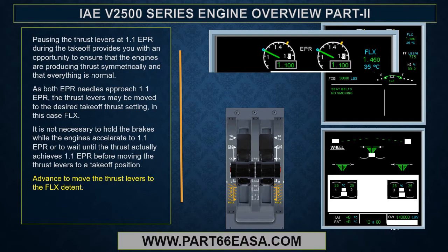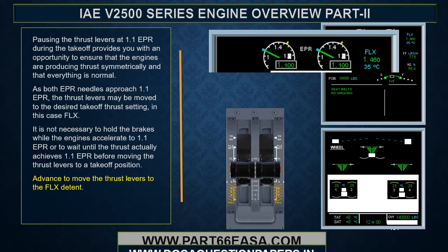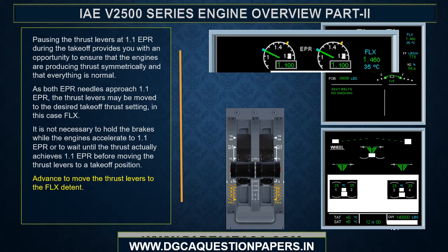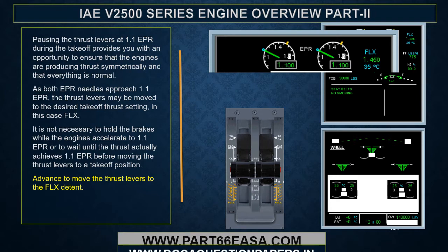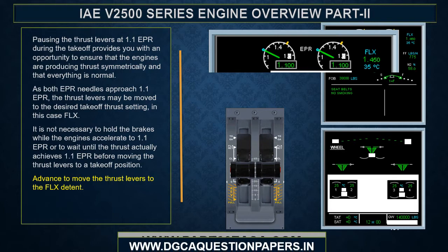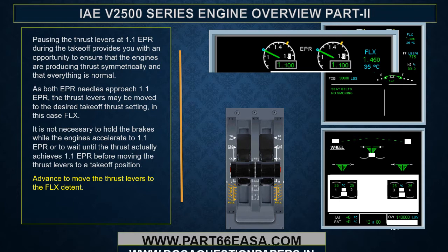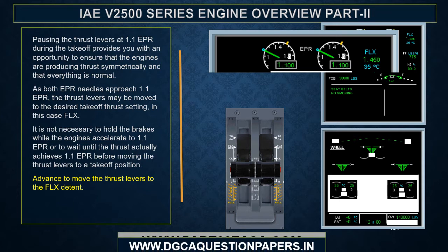As both EPR needles approach 1.1 EPR, the thrust levers may be moved to the desired takeoff thrust setting — in this case, flex. It is not necessary to hold the brakes while the engines accelerate to 1.1 EPR or to wait until the thrust actually achieves 1.1 EPR before moving the thrust levers to takeoff position.